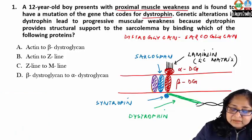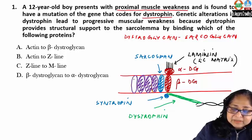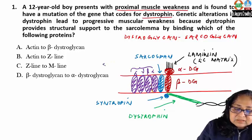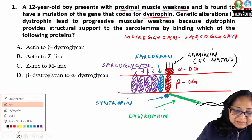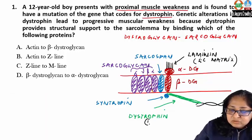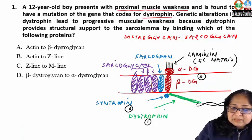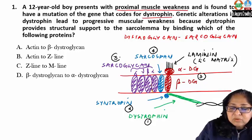Sarcoglycan has four subtypes: alpha, beta, gamma, and delta. So the full list of sarcolemma proteins is: dystrophin, sintropin, dystroglycan, sarcospan, and sarcoglycan.